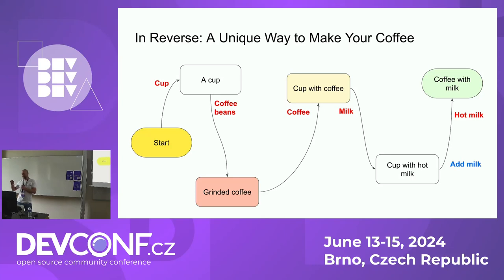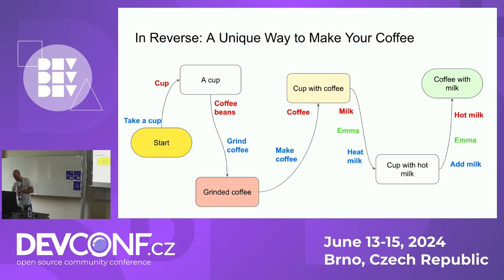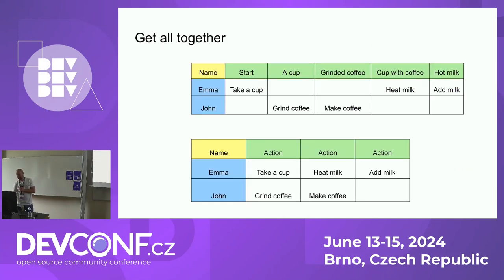Now we need to figure out who is going to do it. Adding milk - Emma will do that. Heating milk - also Emma. Then John makes coffee, and John grinds coffee. And Emma provides the cup to John. Now we see the full picture of it. We can make a small table - we have states, the green ones, and it's basically the same but in a pretty table.